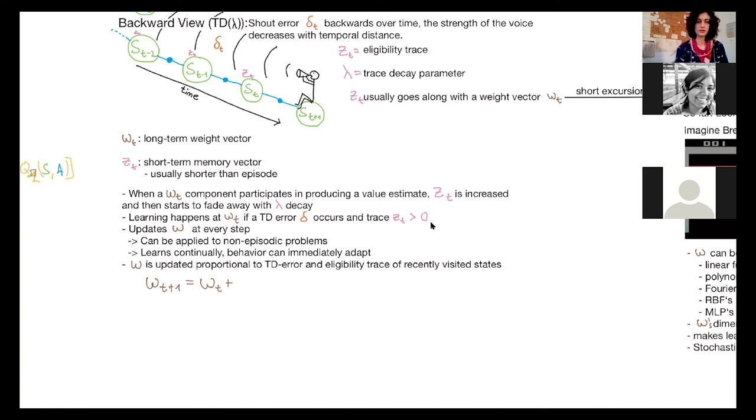So how does learning work now? So the weight vector is updated proportional to the TD error and the eligibility trace of recently visited states. So what does this mean? The new weight vector is the old vector plus alpha, the step size, times the TD error at this time step and times the eligibility trace at this time step.